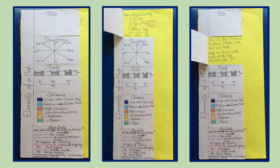We will now view the elements of a map that are title, directions, scale, colors and symbols.